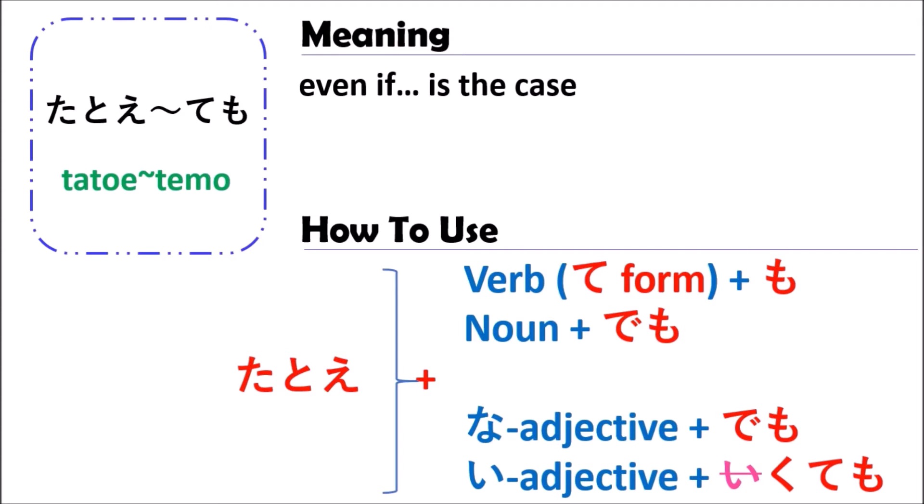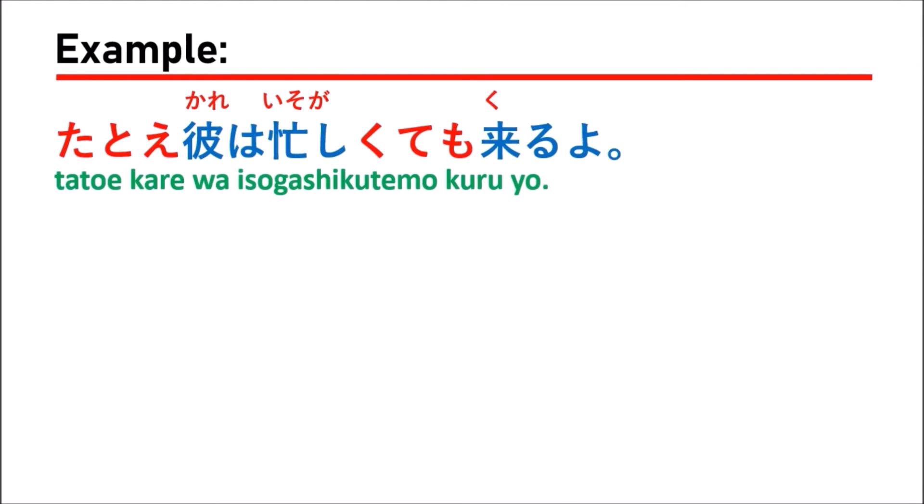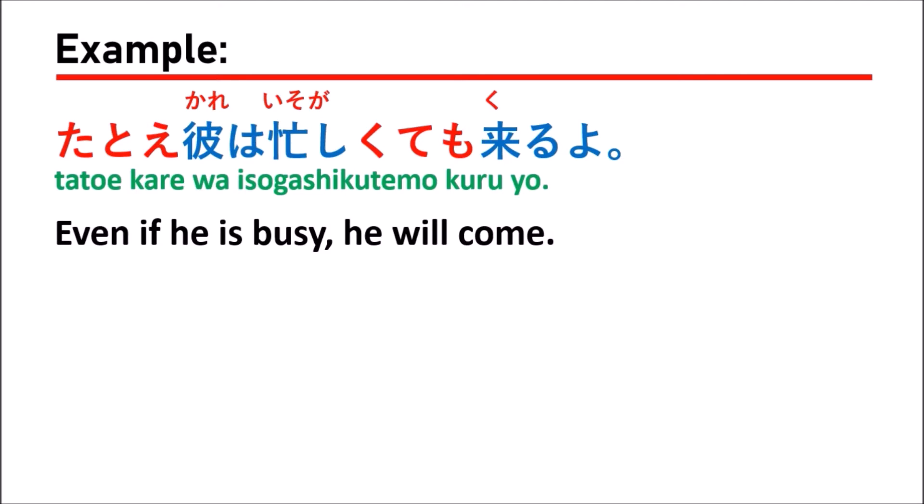To better understand how to use the grammar of たとい何々でも, for example: たとえ、彼は忙しくても、くるよ。 Which means 'even if he is busy, he will come.'